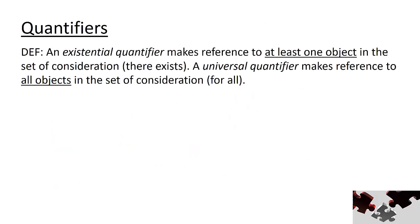This page here summarizes the two quantifiers that we discussed on the last two pages: existential quantifiers, which make reference to at least one object in the set, and universal quantifiers, which make reference to all objects in the set.